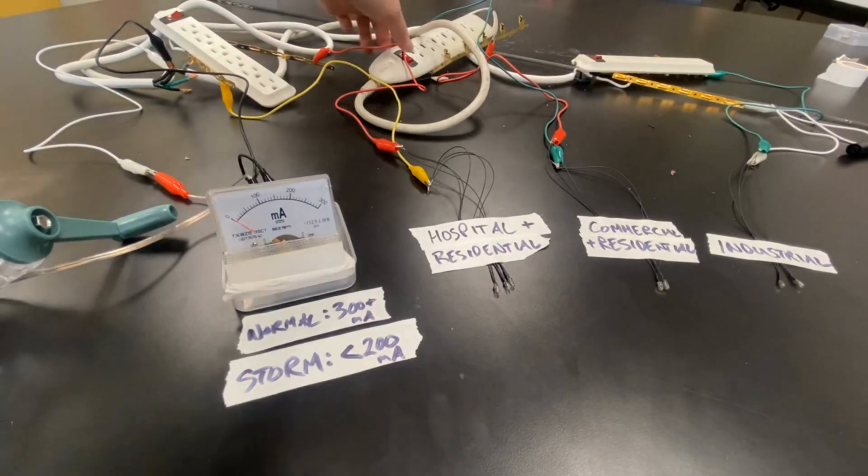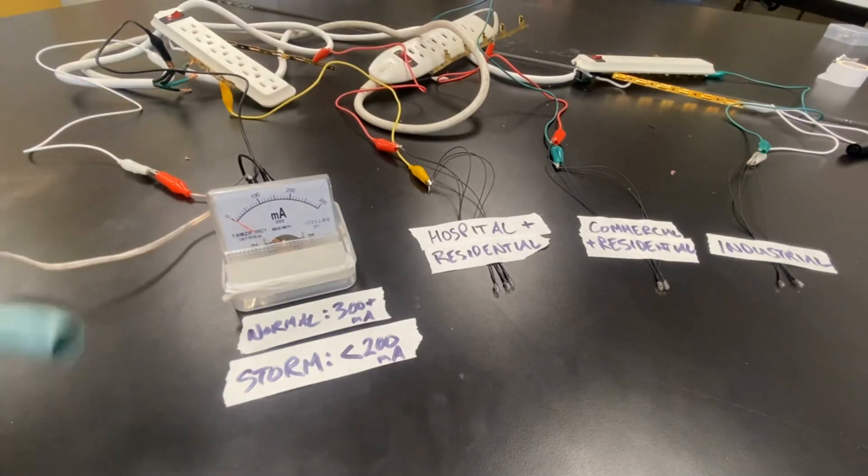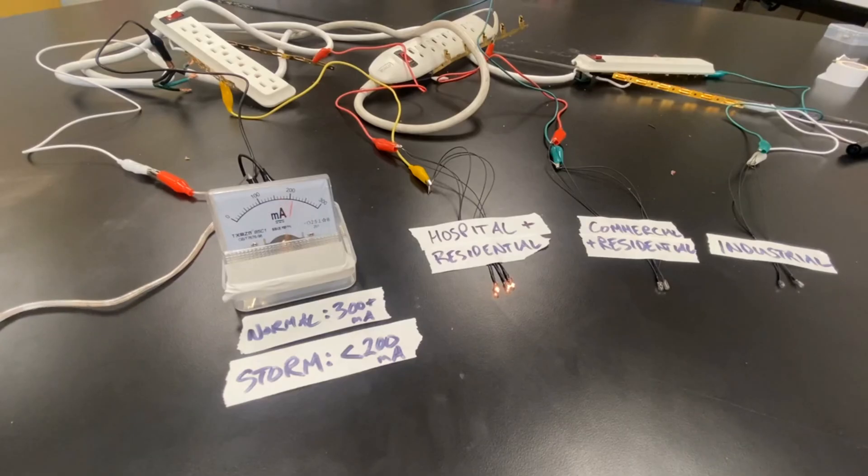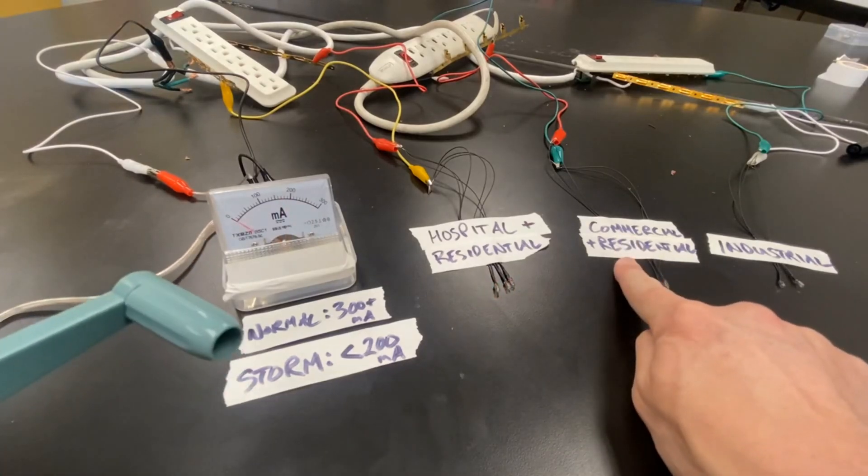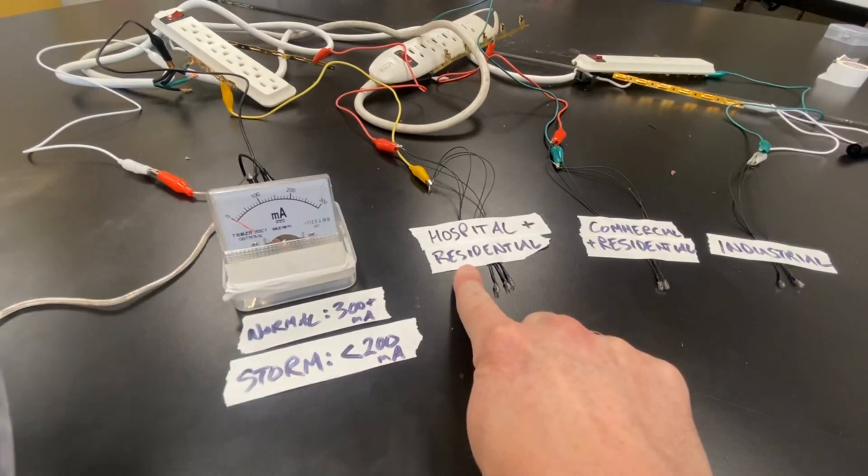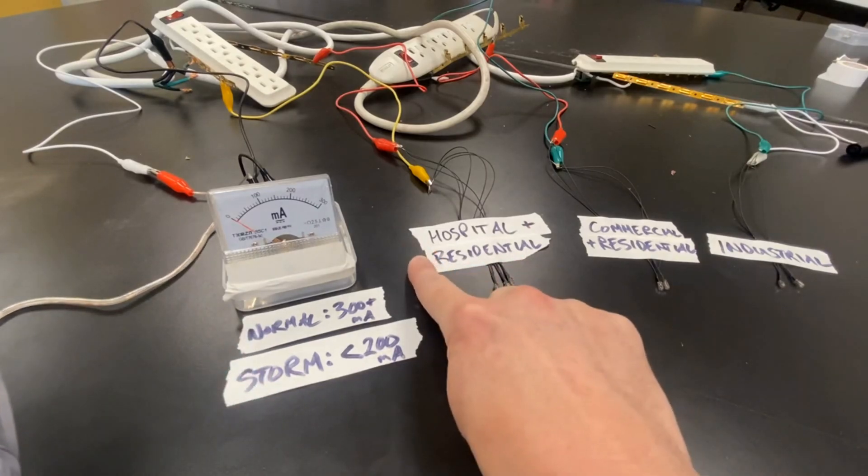We could try turning one of them off and again generating power around 200 milliamps. And we can see the hospital and the residential area nearby is now getting power. The residential area that is next to the commercial district is not getting power. So the people who live here are without power, even though the people who live here have power because they're living next to the hospital.